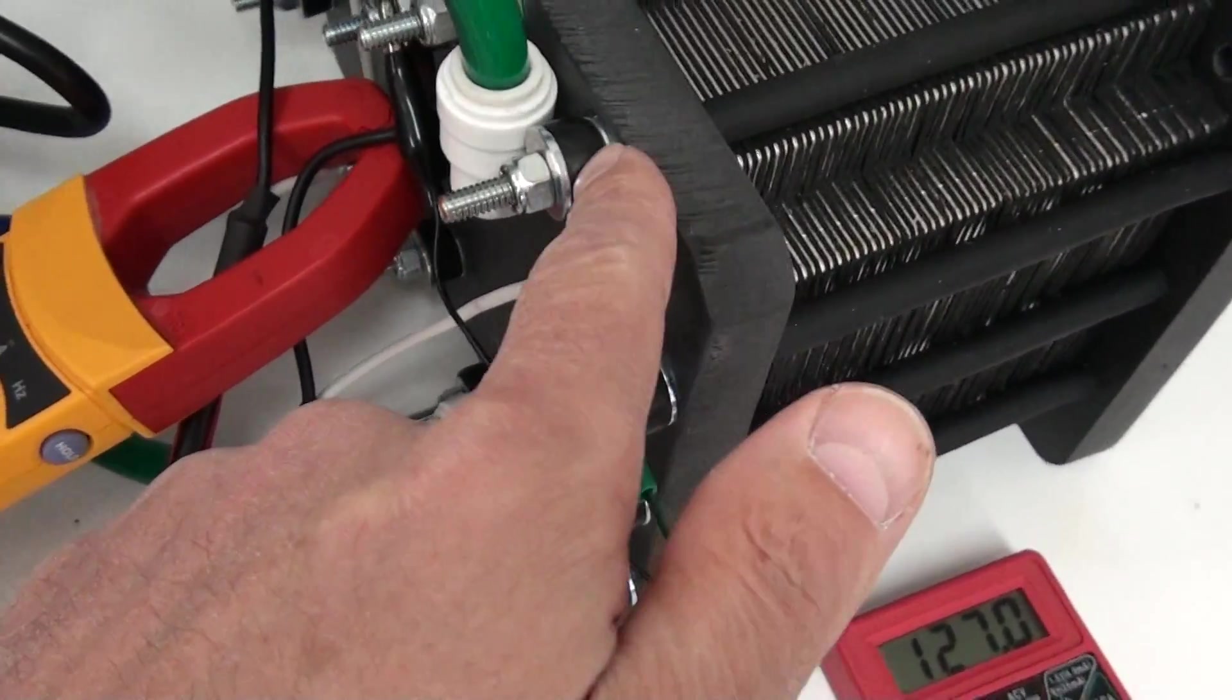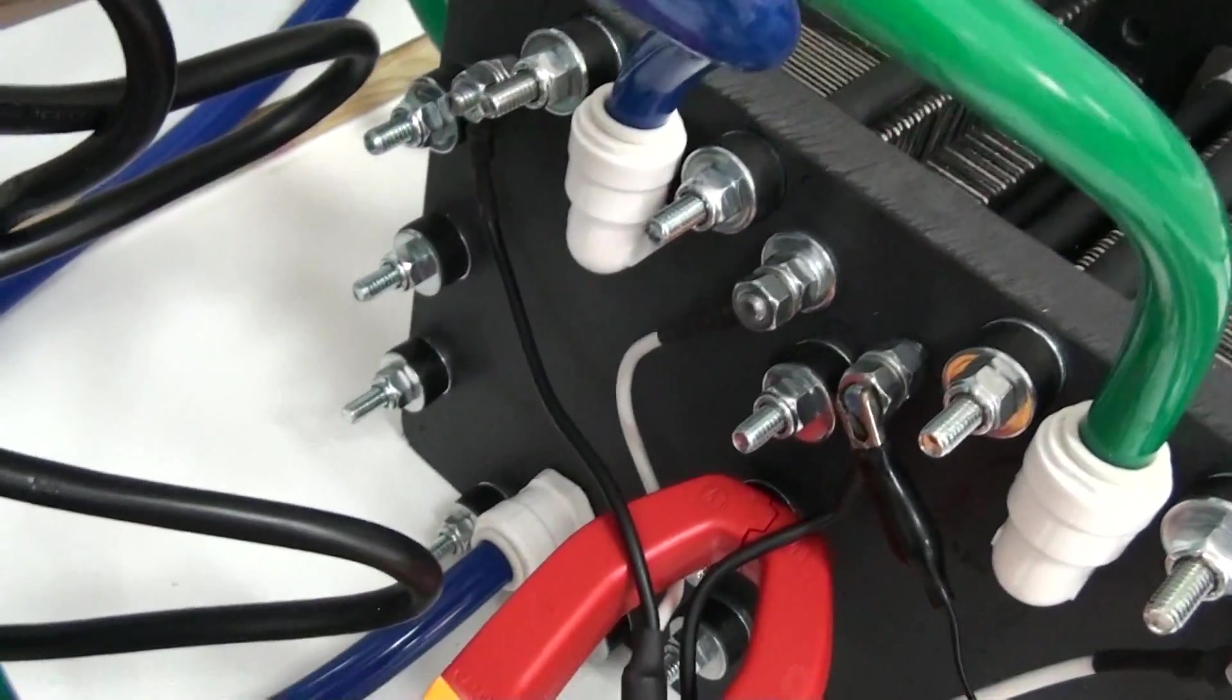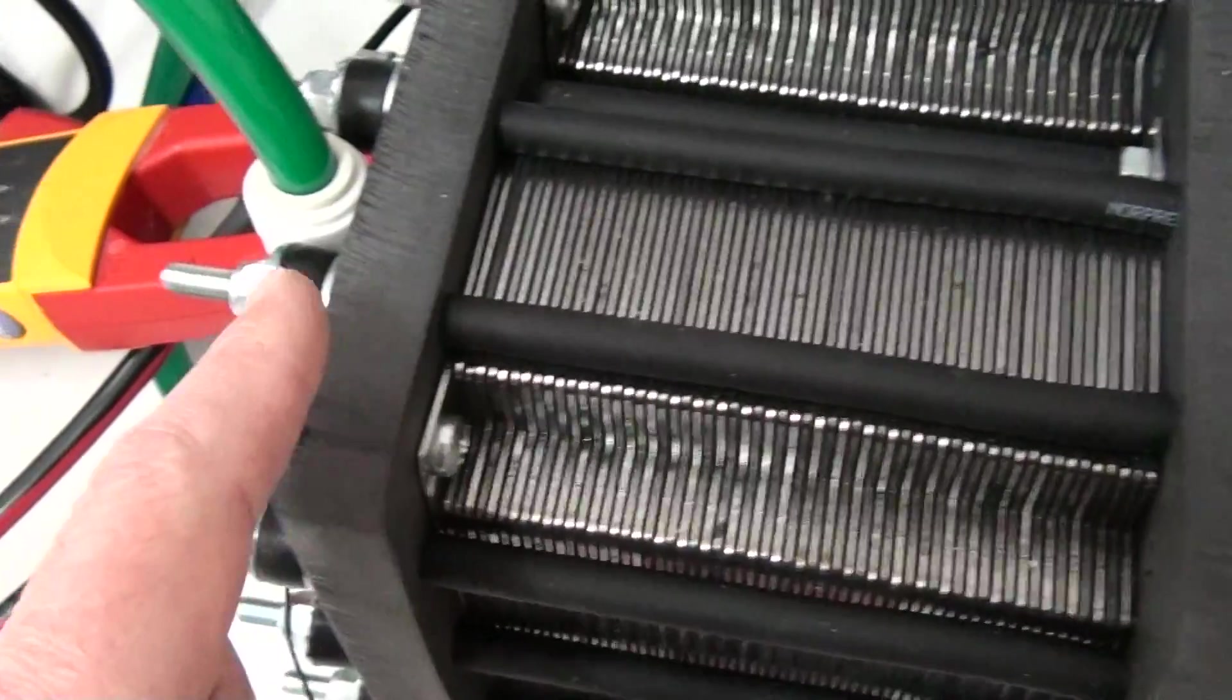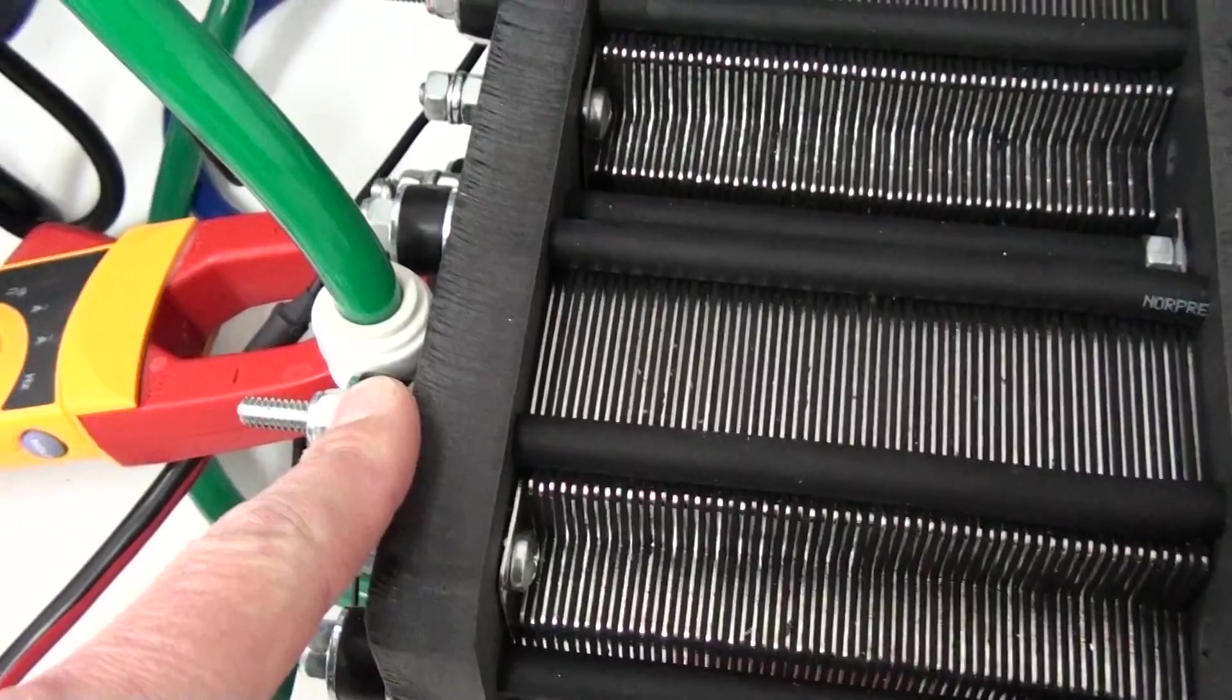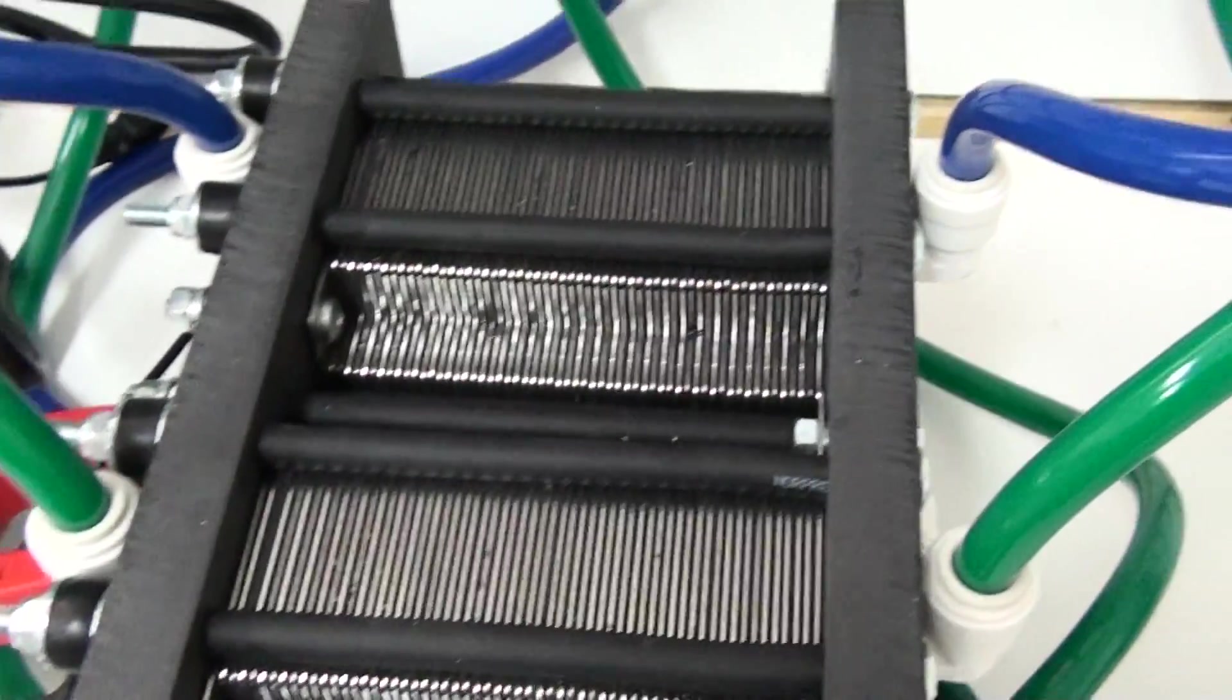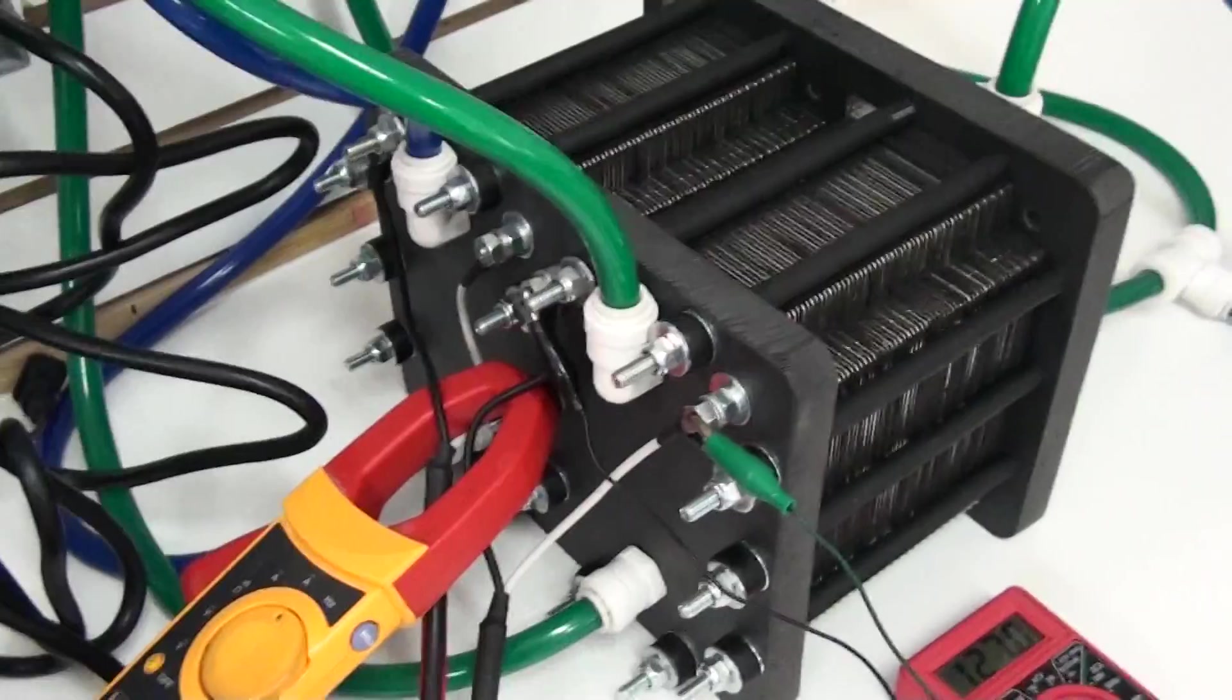As you can see here on the cell, we've got some springs here. There's a spring behind each of the binding bolts. What that allows it to do is when this stack heats up, the springs will absorb the expansion. And when it cools back down, the springs will let it contract. This keeps the cell from leaking. So you can build a big cell like that and not have to worry about it leaking.